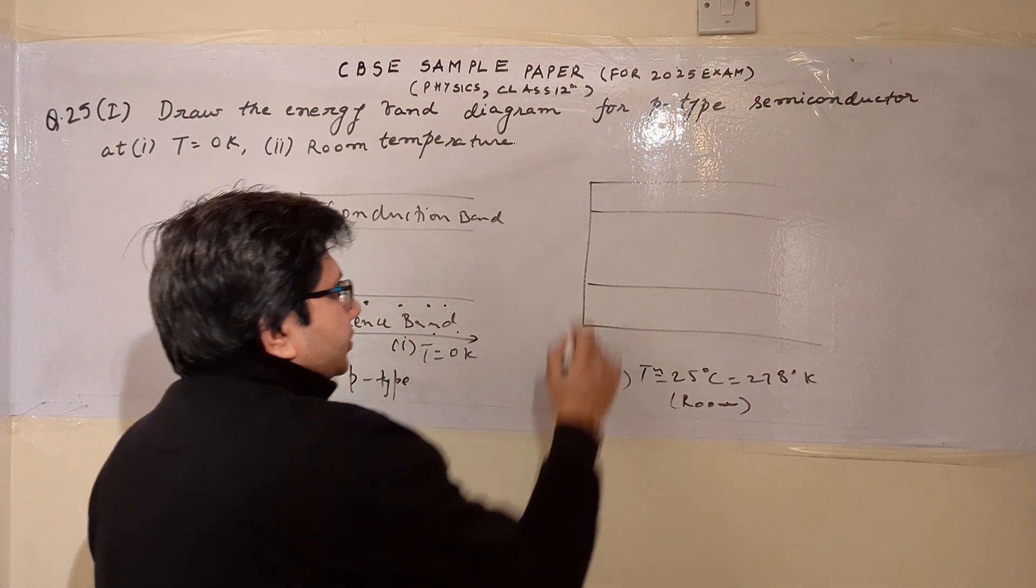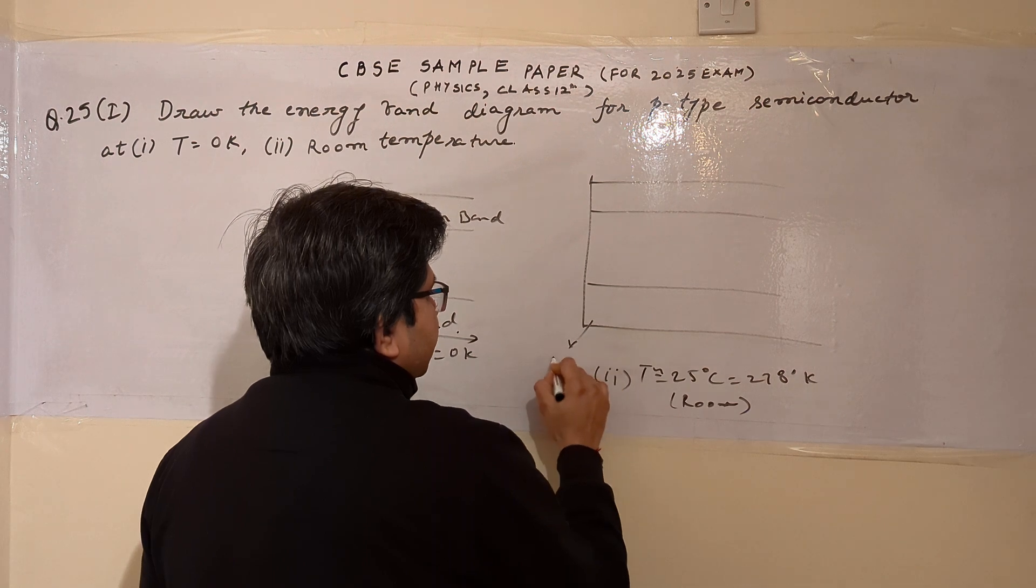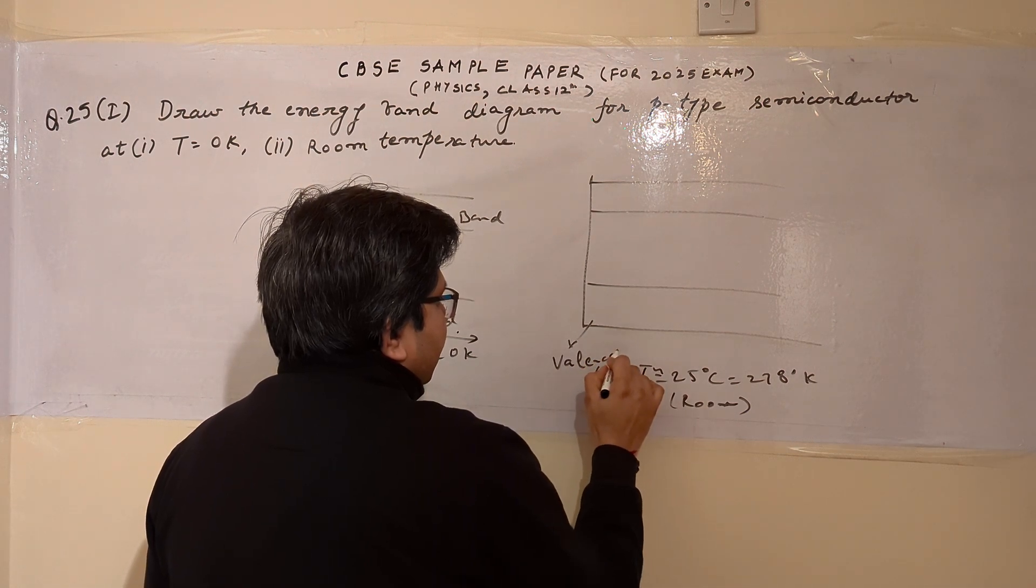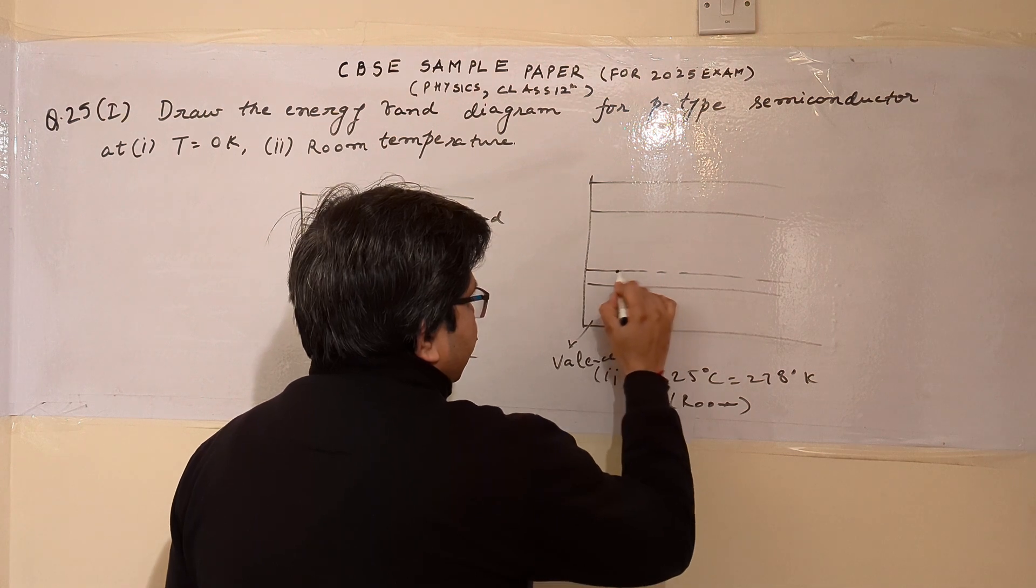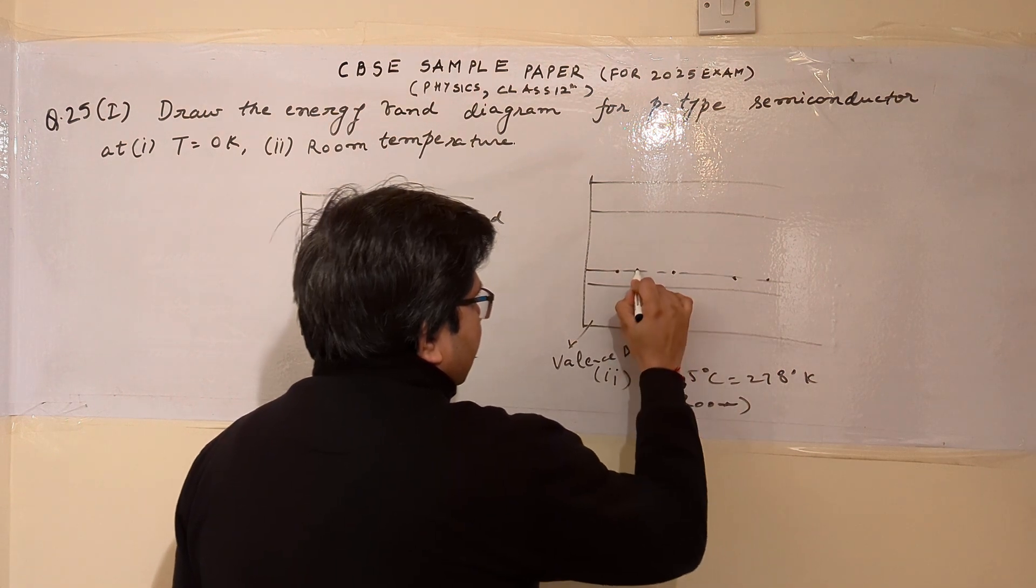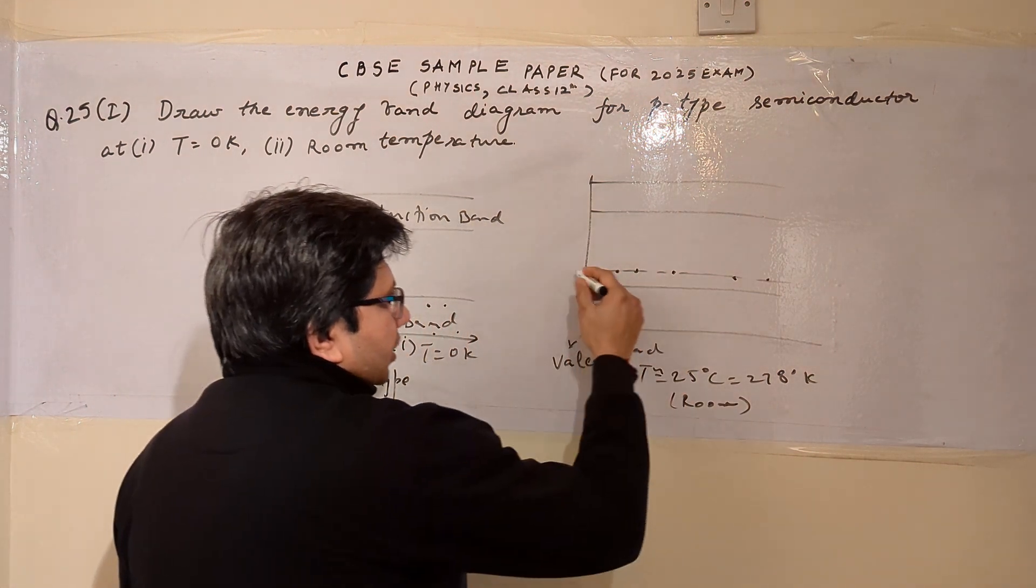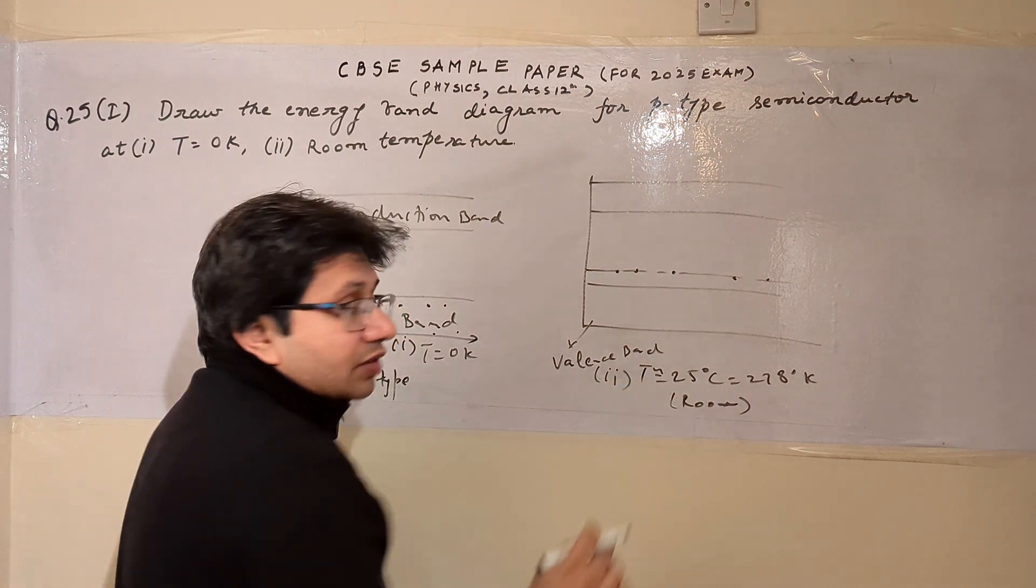So in this particular case, what happens is that in the valence band, some of the charge carriers reside at a level which is just above the valence band.